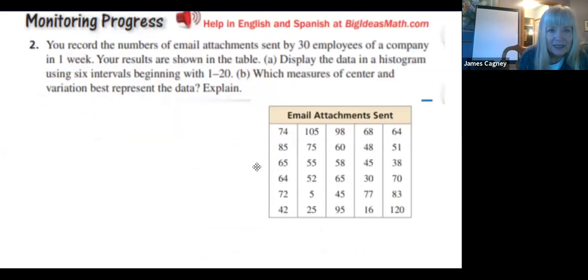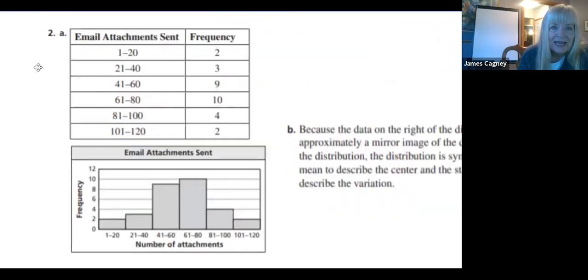Last one, I believe. You record the number of email attachments sent to 30 employees of a company in one week. Your results are shown in the table. Display the data in a histogram using six intervals. So one to 20. Figure out what the other five are. What measures of center and variation best represent the data? Explain. So pause this. Go ahead and make your histogram. Talk about the shape of the histogram. Tell me what measure of center and what measure of variation you would use for this.